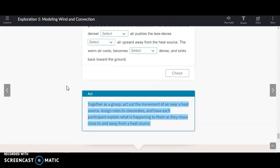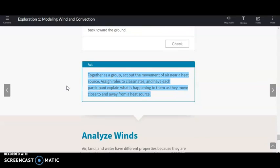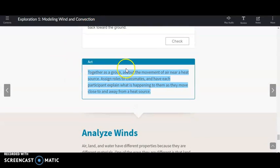Alright, so remember those three things about warm air and those three things about cold air and it will help you to act together as a group. Act out the movement of air near a heat source. Assign roles to classmates and have each participant explain what is happening to them as they move close to and away from a heat source. Oh, I was just checking to see if you guys were listening and looking. Gotcha.